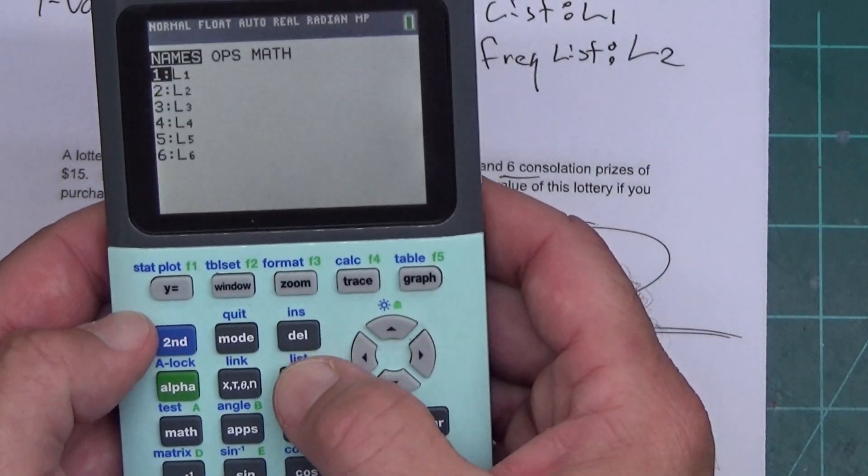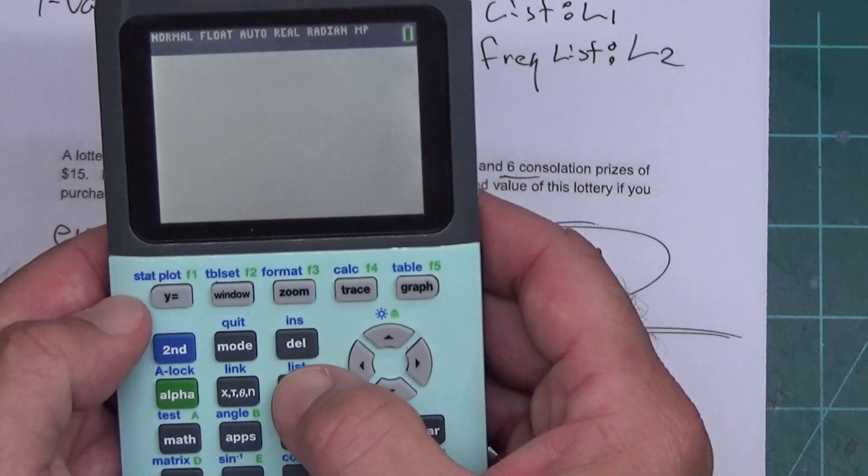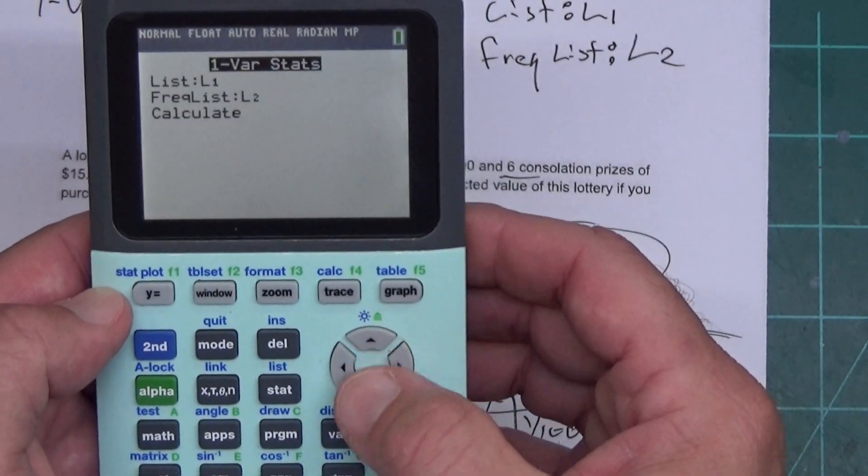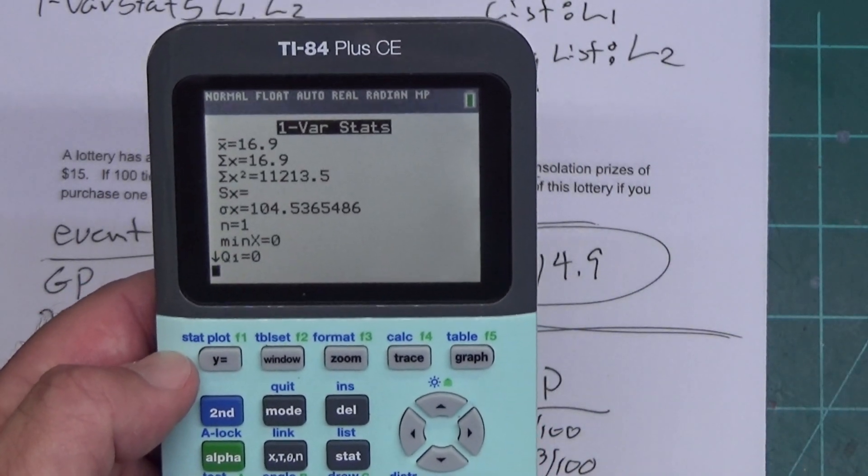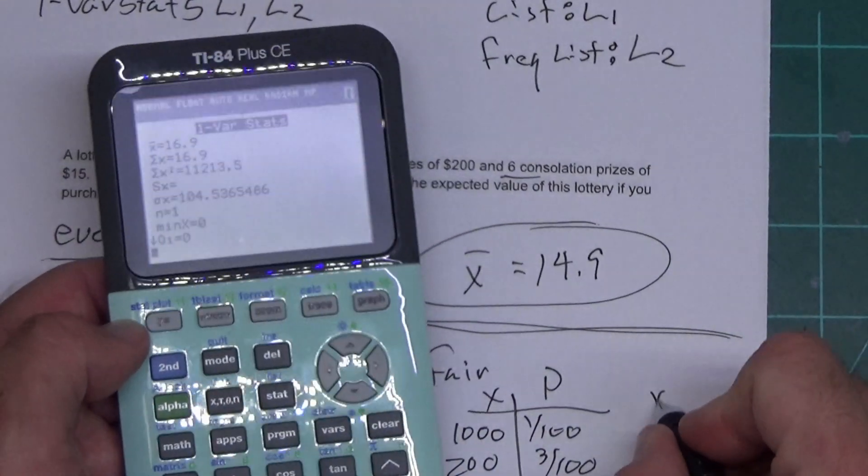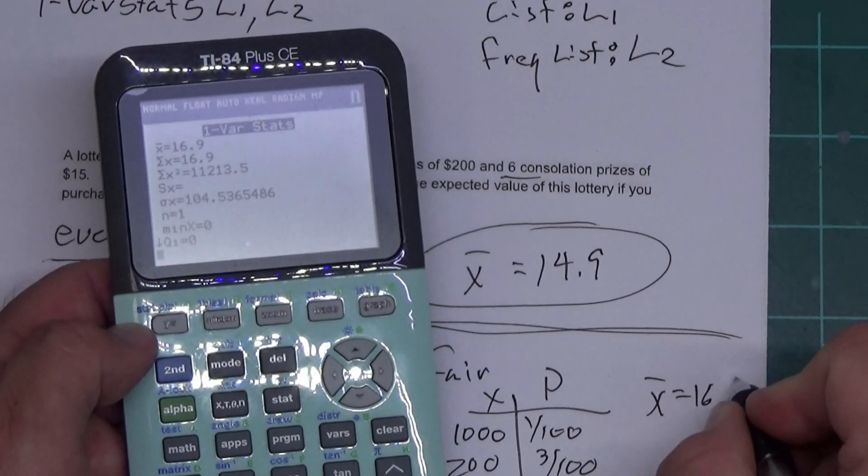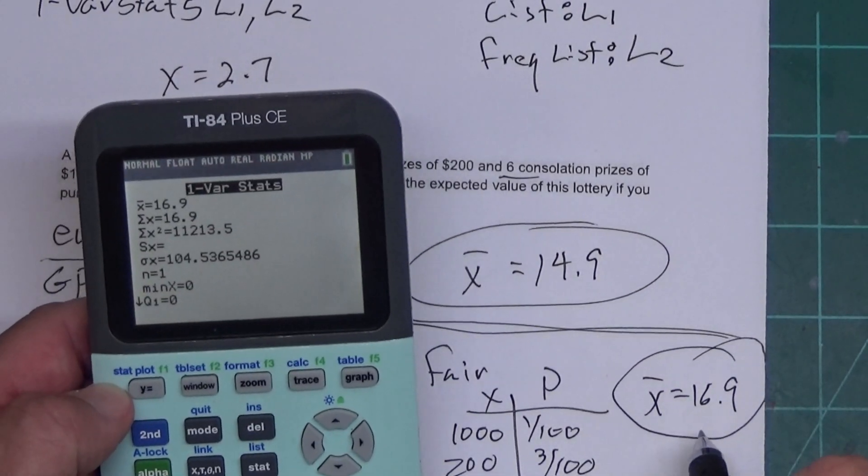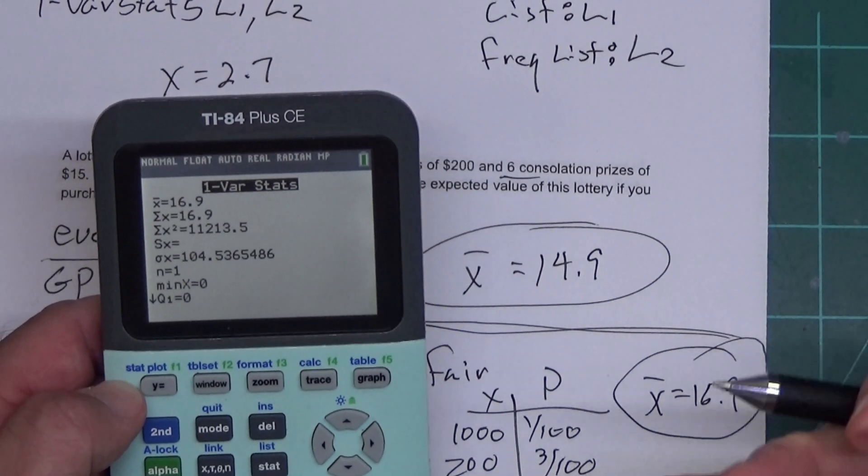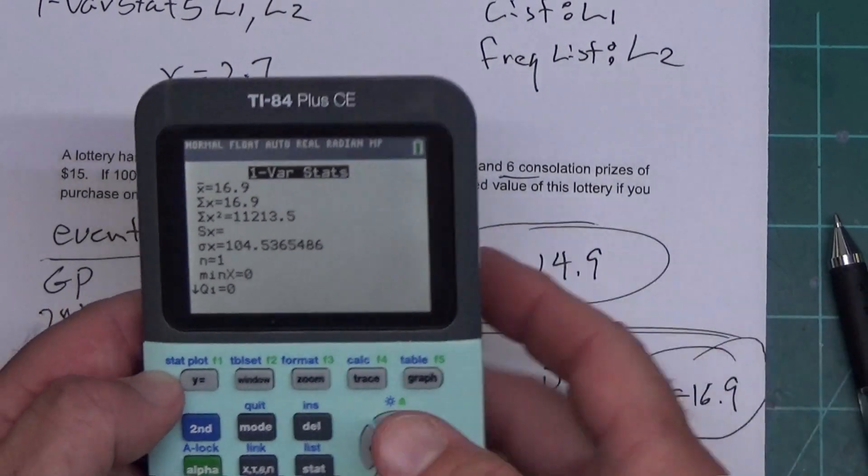And then I'm going to do STAT over to CALC. 1-Var Stats. L1, L2 for the old 84s. Now, I get 16.9 this time. That's how much I should charge for the game to be fair. If I charge 16.9 for the game, my expected value will come out to 0. And to verify this,